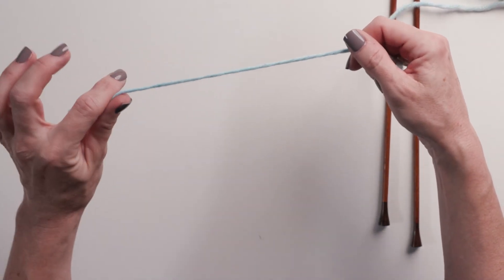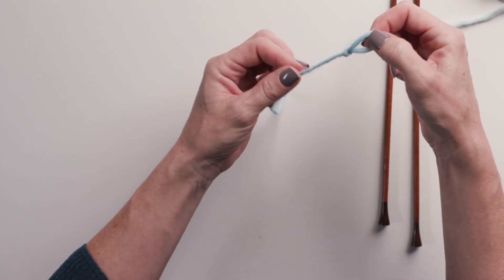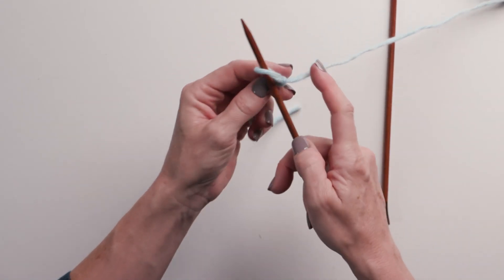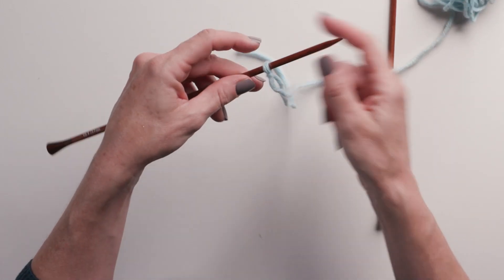So wind off just enough yarn to have a tail to weave in later and make a slipknot. You're going to put that slipknot on your needle, and this will count as your first stitch.